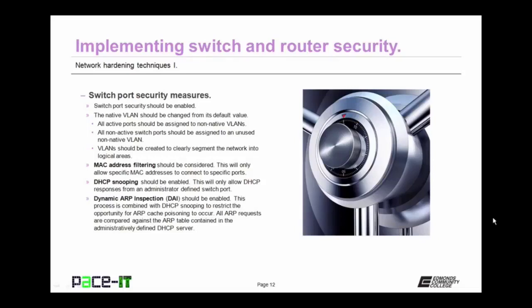DHCP snooping should be enabled. This will only allow DHCP responses from an administrator-defined switch port, meaning that all DHCP responses will come from the same port. In addition to DHCP snooping, dynamic ARP inspection, or DAI, should also be enabled. This process is combined with DHCP snooping to restrict the opportunity for ARP cache poisoning to occur. All address resolution protocol requests are compared against the ARP table contained in the administratively defined DHCP server. Implementing these measures will greatly increase the security of your switches.